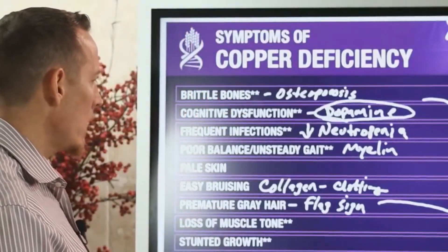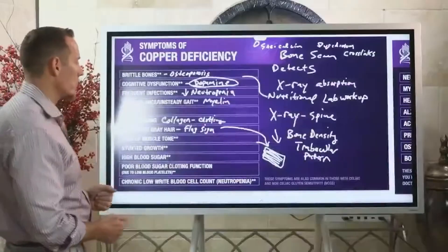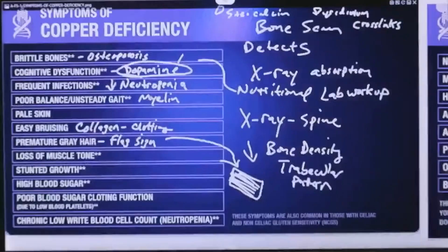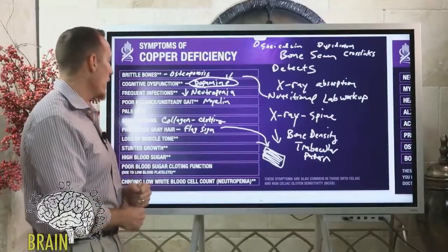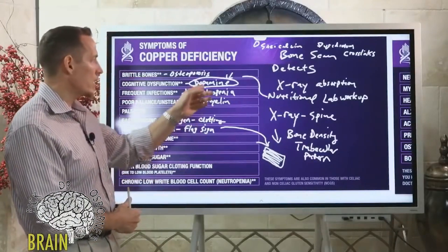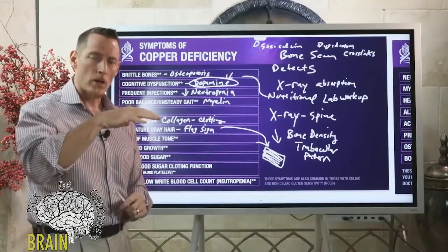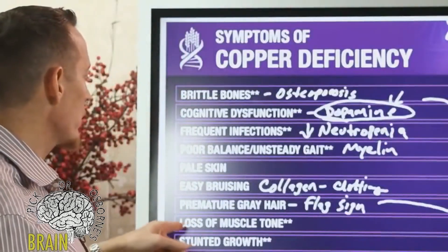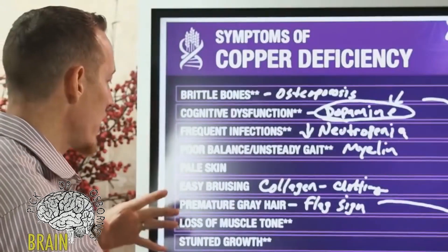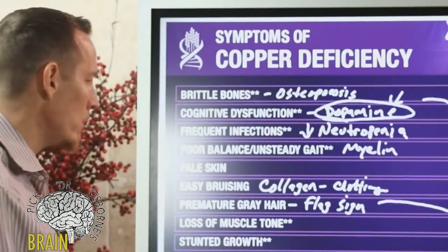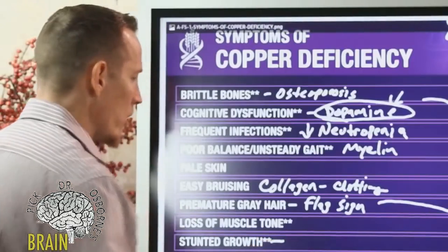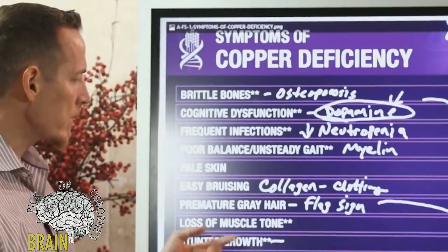Loss of muscle tone is another symptom. Copper is very important for tonicity of the muscle because dopamine drives many neurological pathways that allow your brain to communicate through your spinal cord to your muscles. This is why people with Parkinson's develop tremors — their ability to control muscles starts to become poor, and over time those muscles weaken.